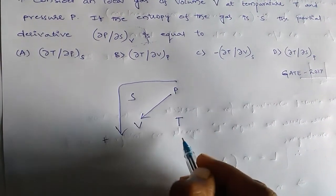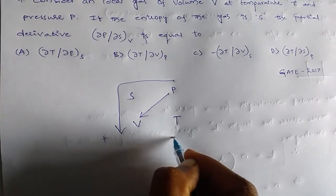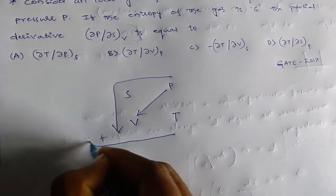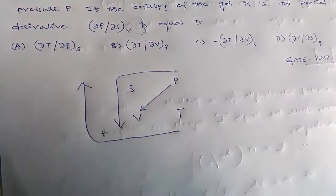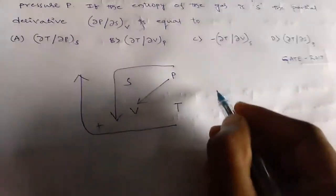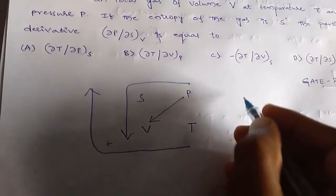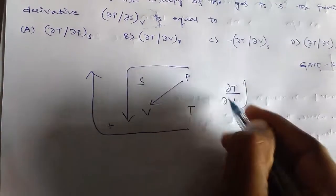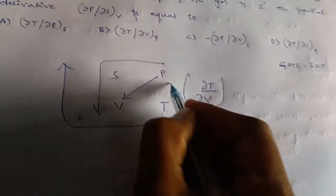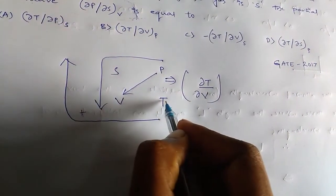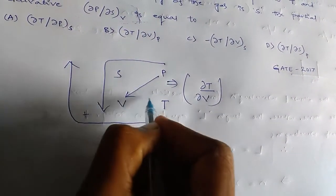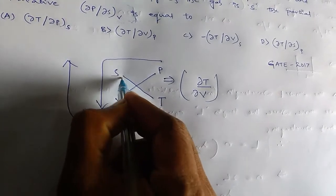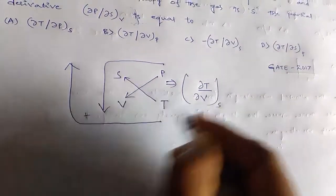Now comes from temperature. So if you check on it. Right. So now from we are starting from T, so that is ∂T/∂V. ∂T/∂V and its opposition is S, so we are writing S.